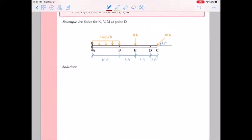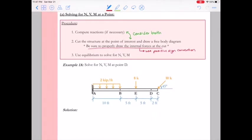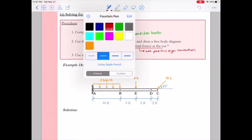All right, so let's go ahead and try example 1A. In this problem we're asked to solve for the axial force, shear, and moment at point D. You can see this beam has a distributed load from A to B of 2 kips per foot, an 8 kip point load vertically down at E, and then a 10 kip point load at C that's acting at an angle to the horizontal of 45 degrees.